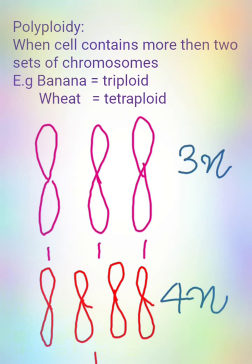Next is polyploid. 'Poly' means so many, 'ploidy' means set of chromosomes. When a cell contains more than two sets of chromosomes it is polyploid. For example, bananas are triploid because each chromosome of banana has three sets. Wheat is tetraploid because each chromosome contains four copies. Similarly, organisms may be pentaploid, hexaploid, heptaploid, and these higher levels are known as polyploid.